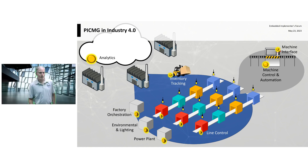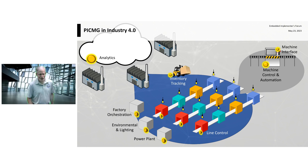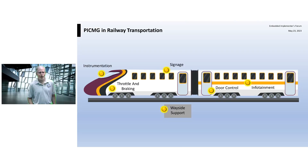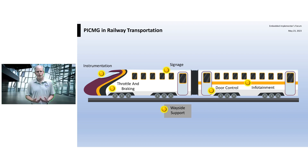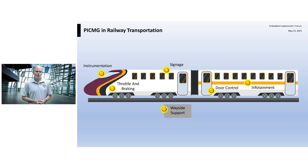Let me show you another one that's really going places — transportation. There is actually a PICMIG specification in CompactPCI Serial which is intended for railway, but there's a whole bunch of other PICMIG technologies that could be used in railway as well. Let's look at a typical train and some of the things that might be controlled or require compute.